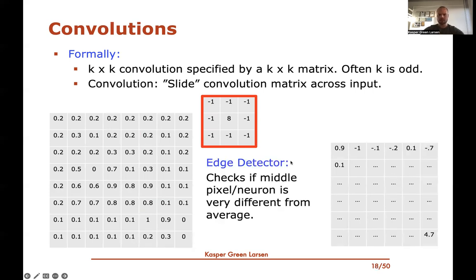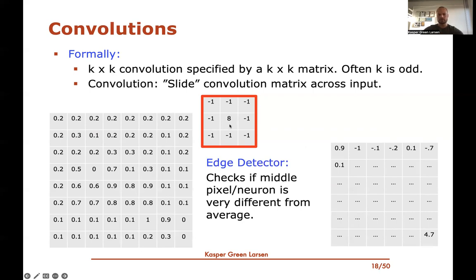What effect did this convolution have? If we align it on a 3×3 region where all pixels have the same value, we get zero — the eight times the middle pixel minus the eight surrounding pixels cancels out. But if the middle pixel is very different from its neighbors — much brighter gives a high value, much darker gives a low value. So this convolution acts as an edge detector: it checks whether the middle pixel differs significantly from the average in its neighborhood.